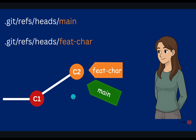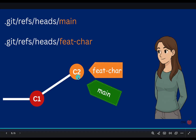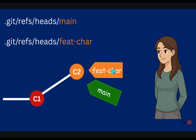What happens under the hood is that the main pointer simply moves forward from wherever it was to the tip — the last commit in the feature branch. In this case it's only one commit, so it just moves forward — that's why it's called fast-forward. Git updates the main file so it now contains the hash ID of commit two, while previously it contained the hash ID of commit one. Feature-chair still points to commit two.